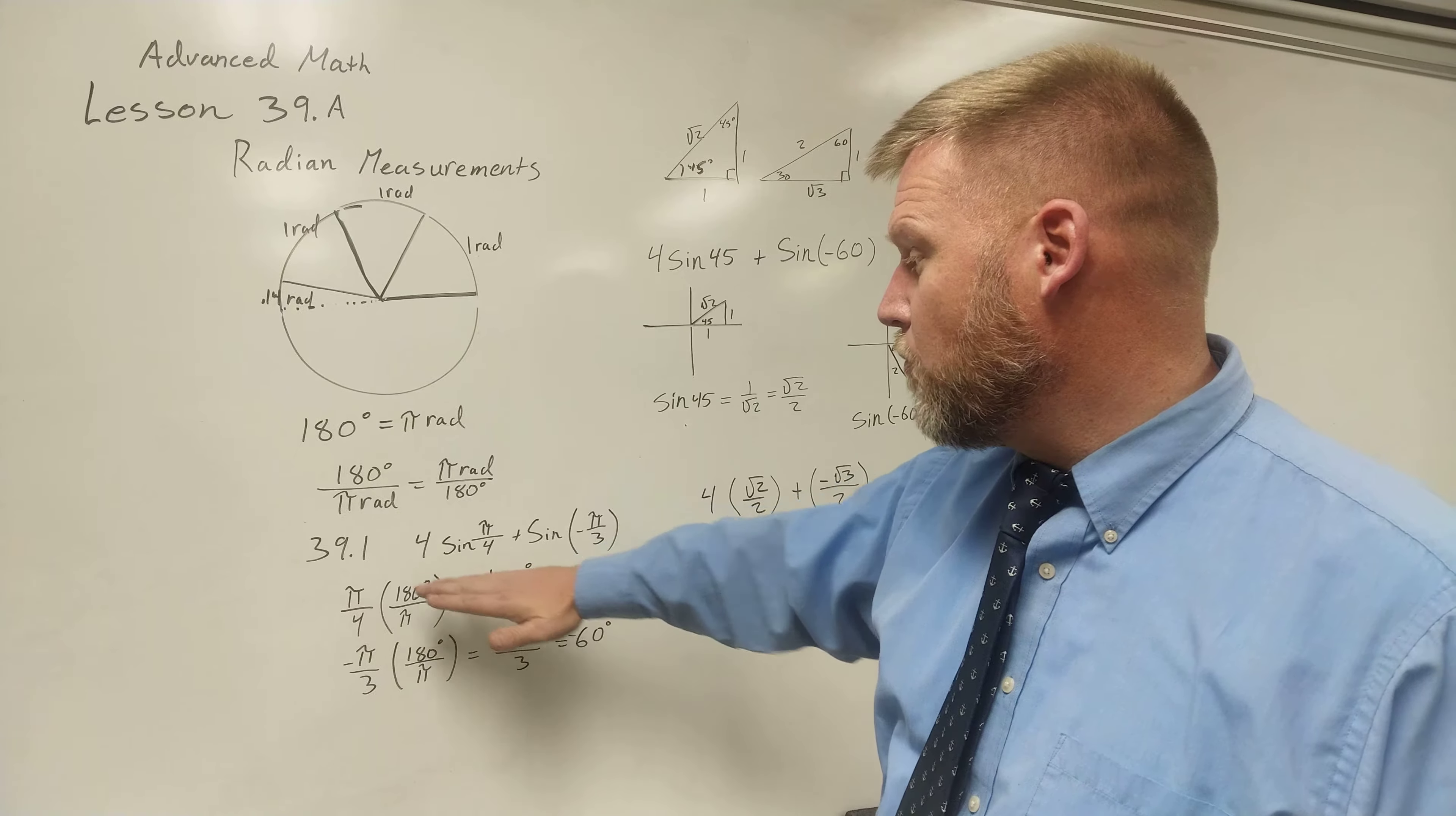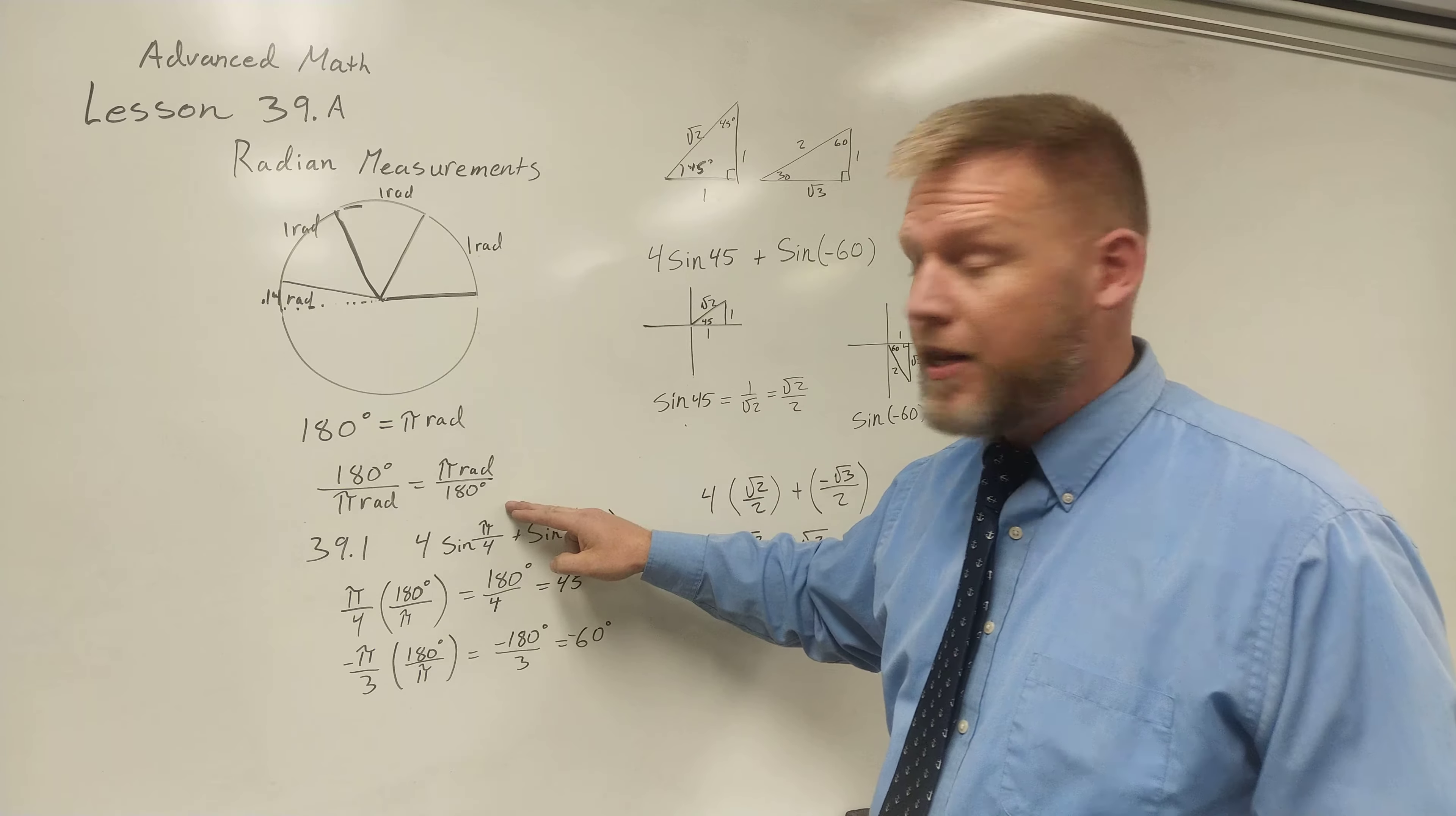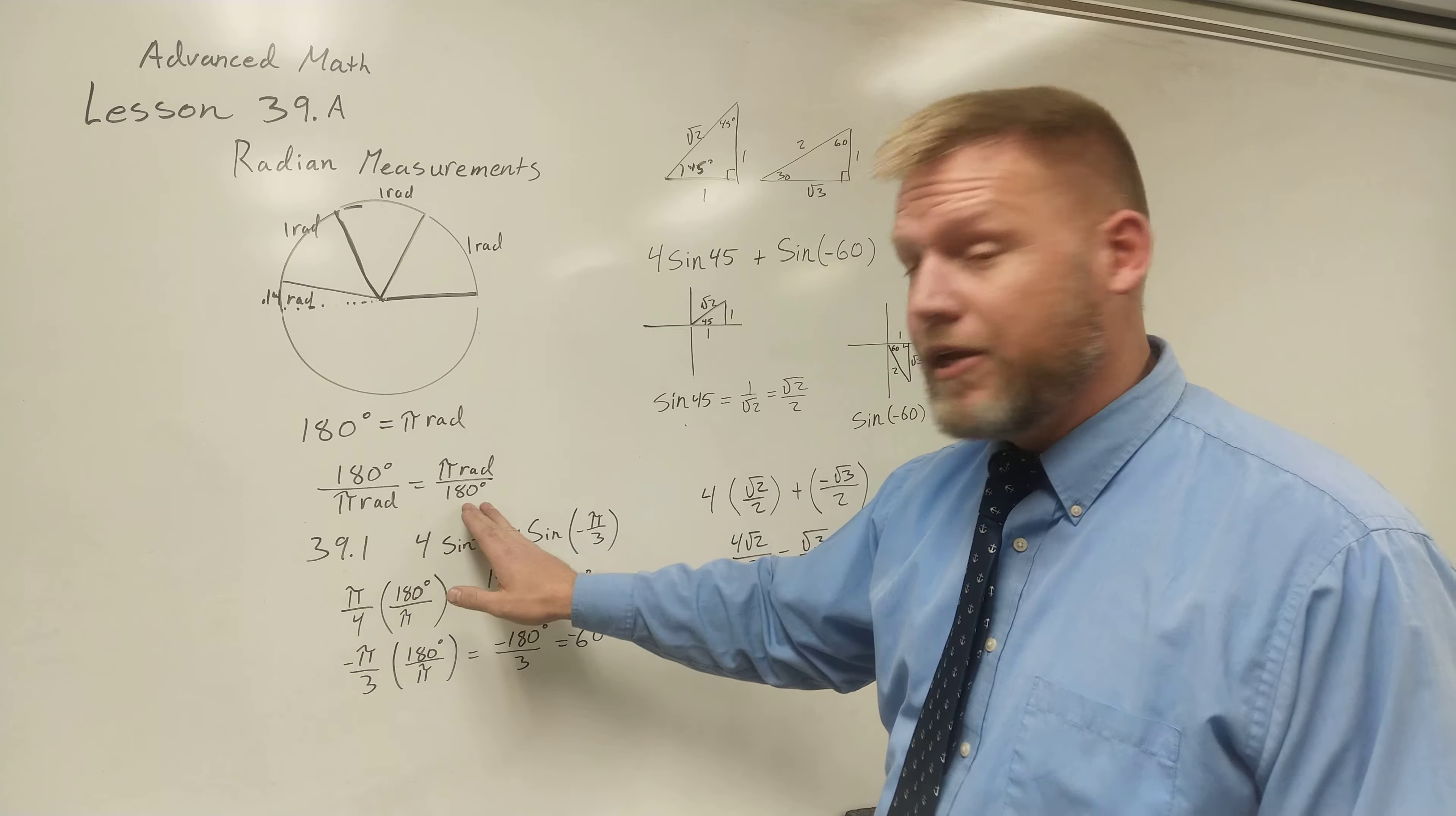Looking at this problem, 4 sine π/4. We have this ratio here that we can say 180 equals π radians. So I can say 180 divided by π radians equals π radians divided by 180. These two equations being, or amounts being equal, mean if I divide by them, I get a value of 1. This is basically saying 1 equals 1.